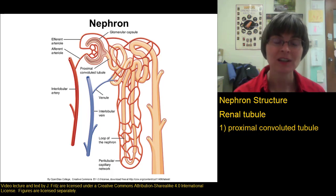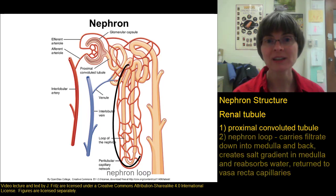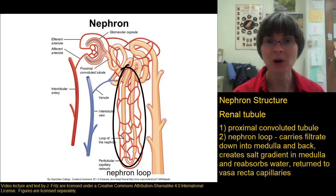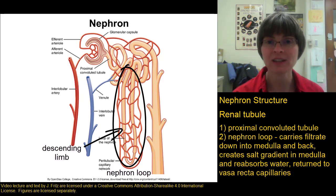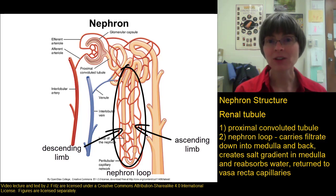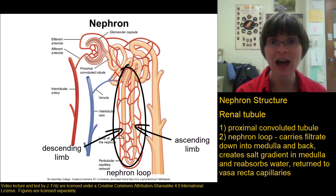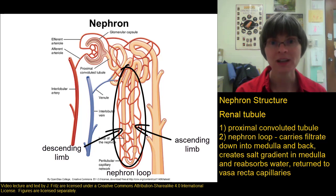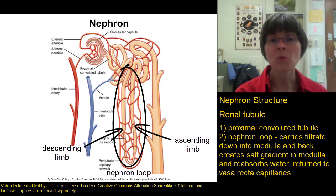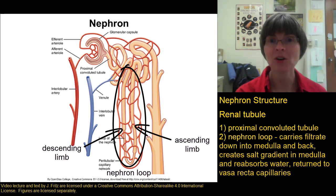The second section of the renal tubule is the nephron loop, which has two parts: the descending limb that goes down into the medulla of the kidney, and the ascending limb that goes back up into the cortex. The nephron loop is important because it sets up a salt gradient in the medulla — an area of high salt — that's really important for reabsorbing a lot of water. The water reabsorbed by the nephron loop goes back into the capillary bed called the vasa recta.